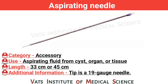Aspirating needle. Category: aspirating. Use: aspirating fluid from cyst, organ, or tissue. Length: 33 cm or 45 cm. Additional information: tip is a 19 gauge needle.